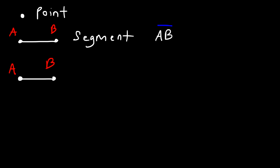A ray, on the other hand, has a beginning but has no end. So a ray has one arrow. You can write this as ray AB.